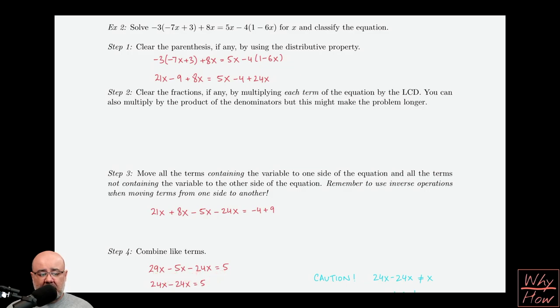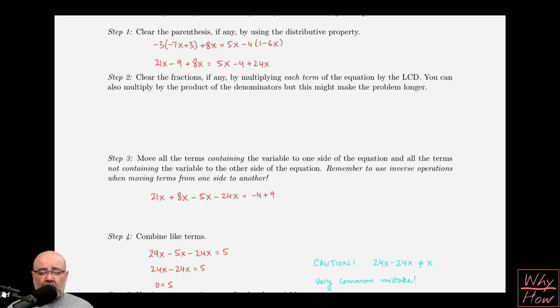Now here, very very important mistake to avoid. 24x minus 24x is just 0. If you subtract something from itself, you're always going to get 0 as an answer. A very common mistake that students will make here is say, well, there's got to be an x left over. I have never had equations where I didn't have an x left over. That's not true.